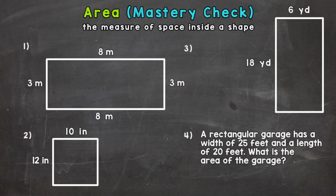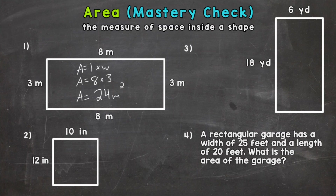Welcome back! Let's go through these four problems to see how you did. Number one: let's start with our formula — area equals length times width. Plugging in, I'm going to use 8 for the length times 3 for the width. If you flip those and have 3 for the length and 8 for the width, that's still fine — you'll get the same answer. You should have gotten an area of 24 square meters.